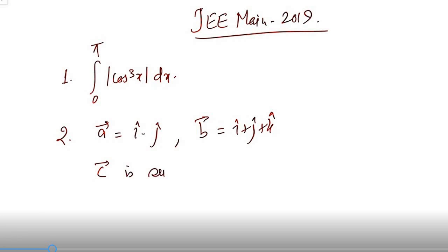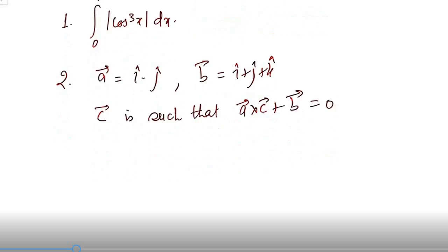c vector is such that a vector cross c vector plus b vector is equal to zero, and a dot c is 4, then find mod c square.